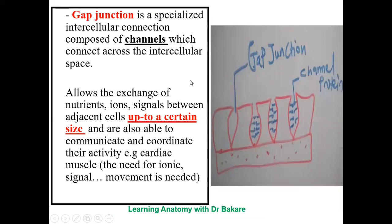The second junction is the gap junction. From the name, there is a space between the epithelial cells, but this space is embedded with a channel protein. This channel protein is responsible for the movement of ions or molecules from one cell to the other, so there is actually allowance for movement. This kind of junction is seen in the cardiac tissue, where there is need for ionic and signal transfer from one cell to the other.